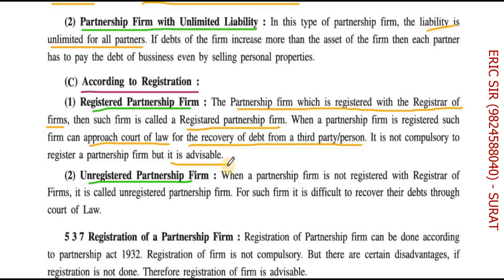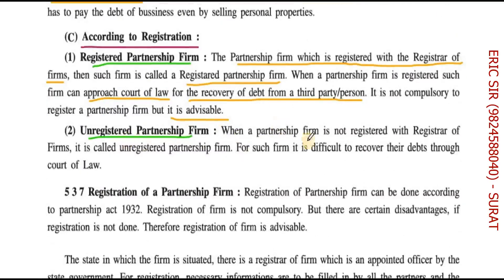Registration also helps in cases of succession. For example, two friends start a partnership firm and one of them dies — it may be very hard for that person's son or heir to be on the same terms as their parents. Two brothers start a business, grow it, and after them their sons take over, but the sons are not compatible and start fighting. If the firm is registered, it is easy to separate it out. An unregistered partnership firm is not registered with the Registrar of Firms, so it is difficult to recover debts through the court of law — that is why it is advisable to always register a partnership firm.